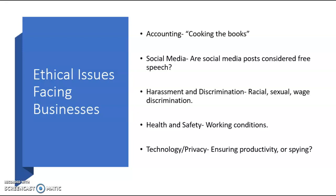Another example that we see is health and safety, relating back to the last example — this is similar to working conditions, and it's more of a physical thing. However, for our last example, technology and privacy — a lot of people call it ensuring productivity, but some people are calling it spying, and it's becoming a bigger deal every single day. Basically, it's companies that have access to a company email or something like that, and they have all the power to spy on your emails and see what you're doing day to day. That's not an ethical way to work in a business.